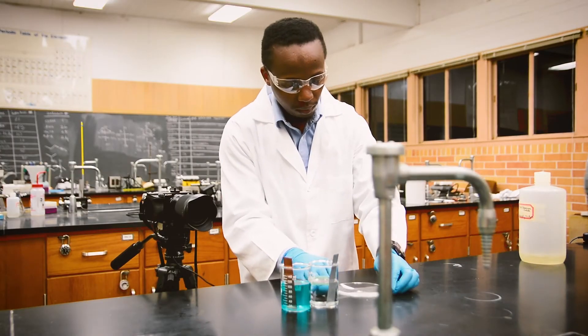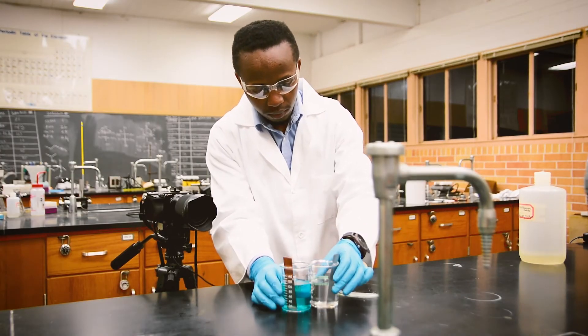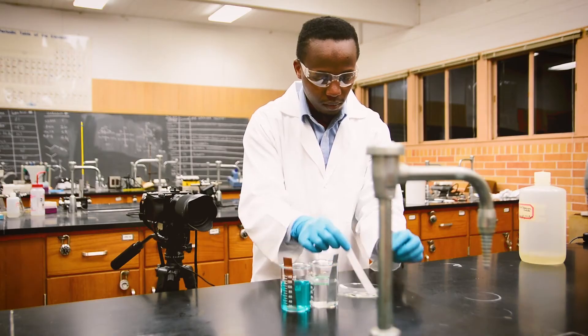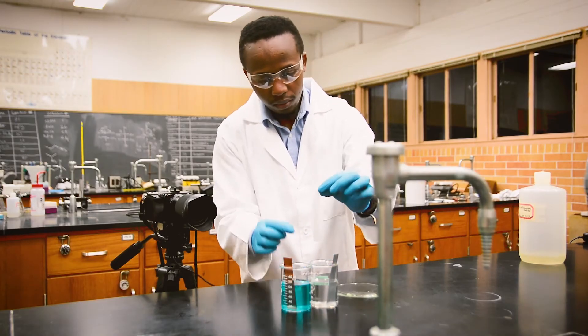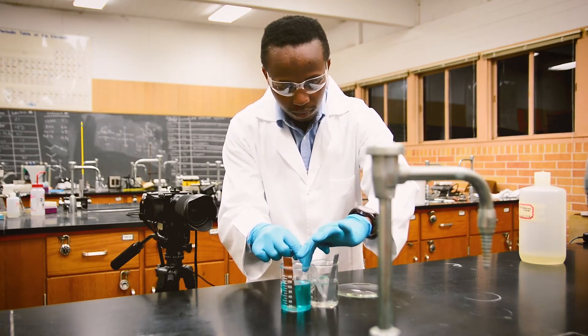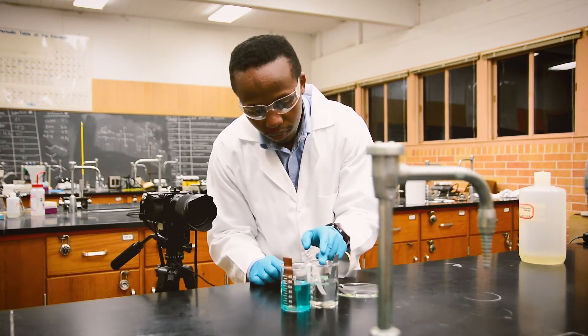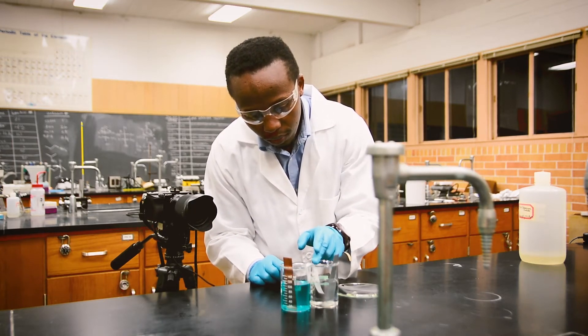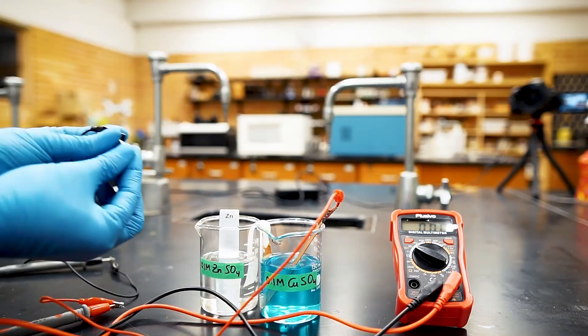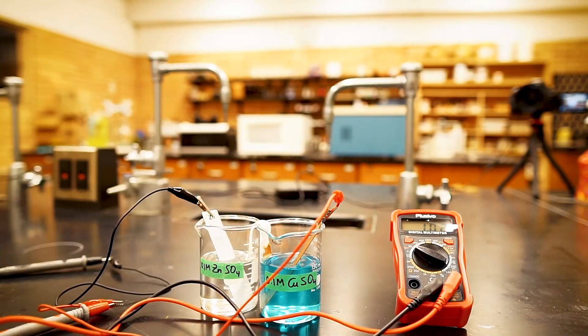Today we're going to use potassium iodide for our salt bridge. Let's cut up some filter paper and dip it into our solution. This is what we will use to connect the two beakers. Now that we've created our two cells and connected them by a salt bridge, let's add a voltmeter so that we can measure the voltage. And look at that, we are already producing electricity.